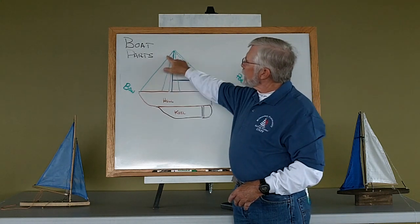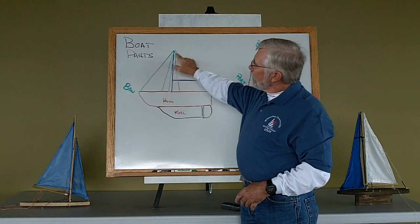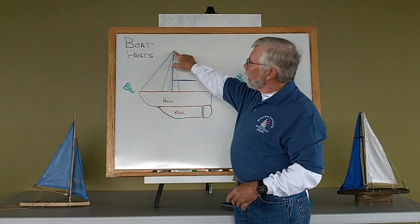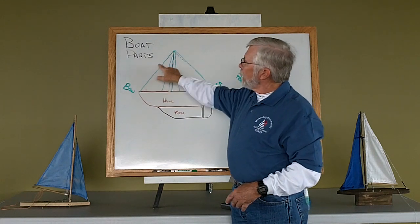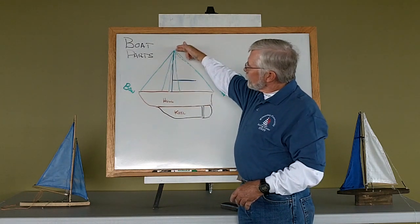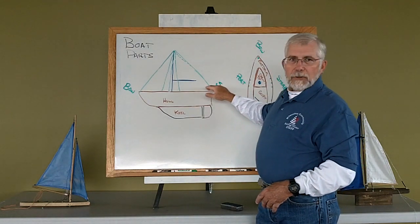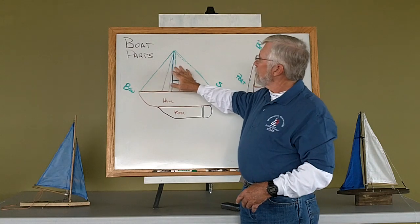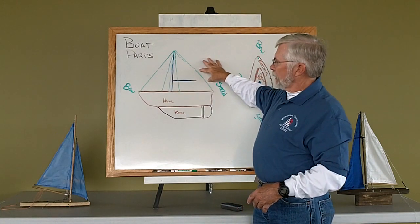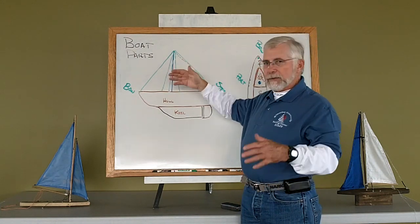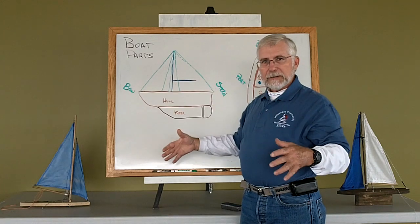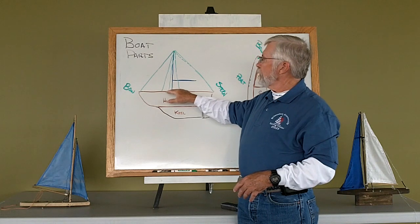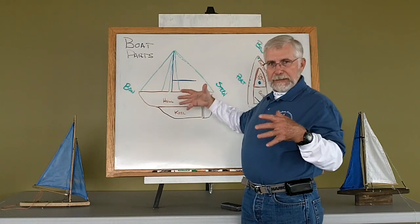And you see these lines that we've drawn on here. We have a wire rope cable that comes from the bow up to the top of the mast, from the top of the mast back to the stern. Those are called stays. This is the forestay, this is the backstay. And we have also on the sides of the mast, on each side, generally three, sometimes two, but generally three side stays.